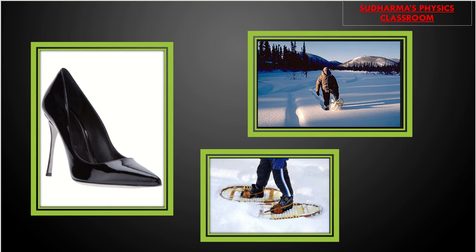Snow boots are another example. They have very wide bases. If you wore narrow shoes on snow you would not be able to walk properly. But with wider snow boots, your body weight is distributed over a larger area, reducing the pressure on the snow surface. More area means less pressure, so you can walk over snow easily.